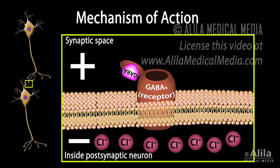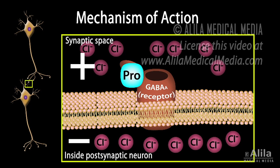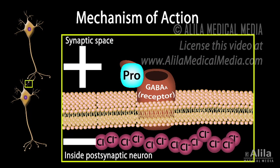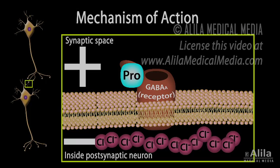This makes the neuron hyperpolarized and less likely to fire. In other words, GABA makes the brain cells less responsive to new stimuli. Propofol binding has been proposed to potentiate GABA receptors, keeping the channels open for a longer time and thus exaggerating this inhibition effect.